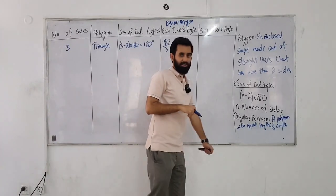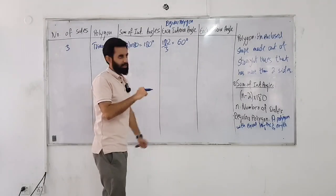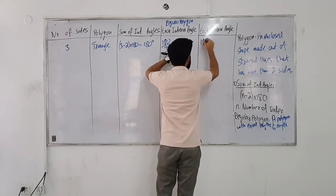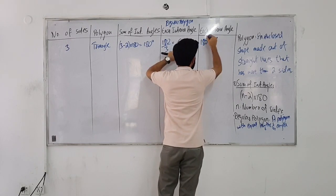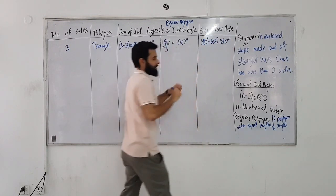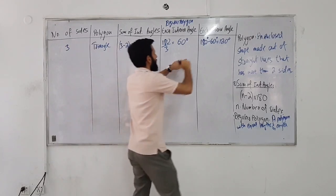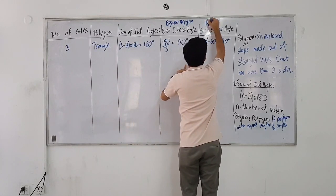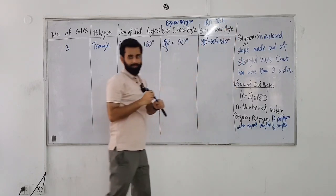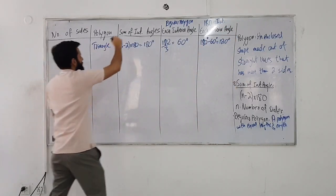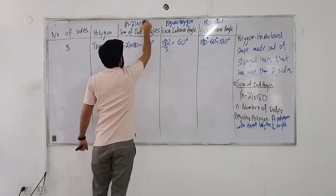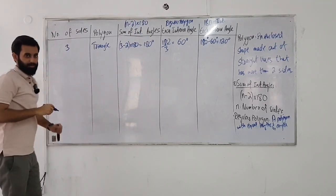How do we calculate each exterior angle? 180 minus 60. What's 180 minus 60? It's 120 degrees. So remember: how do we take the exterior angle? 180 minus the interior angle. And how do we take the sum of interior angles? n minus 2 times 180.